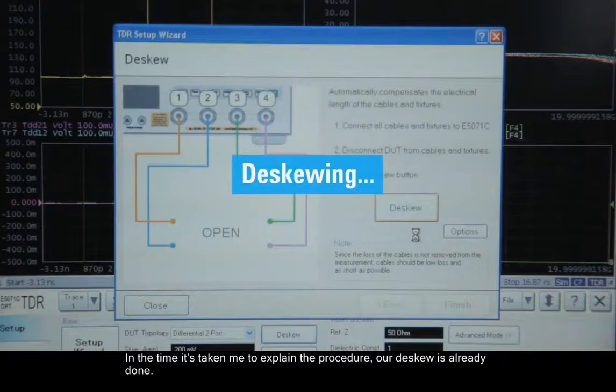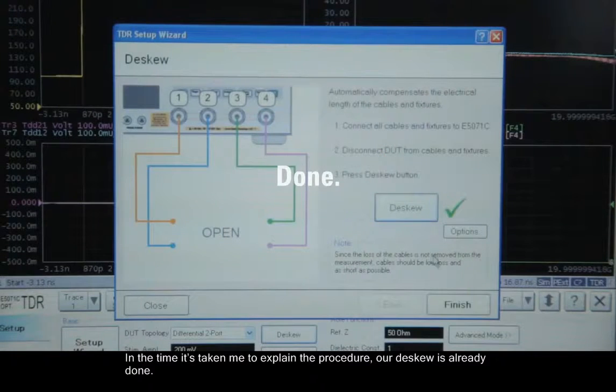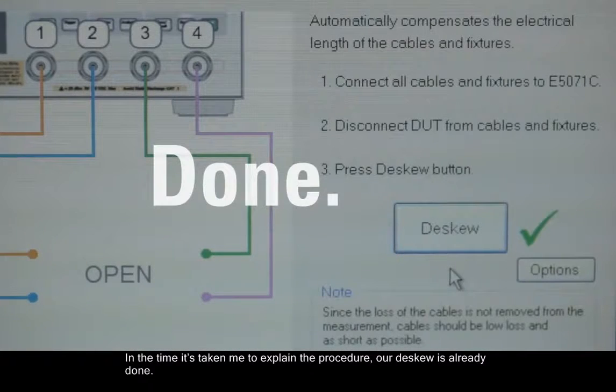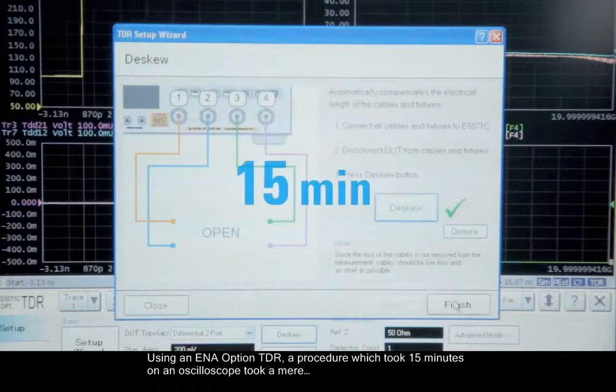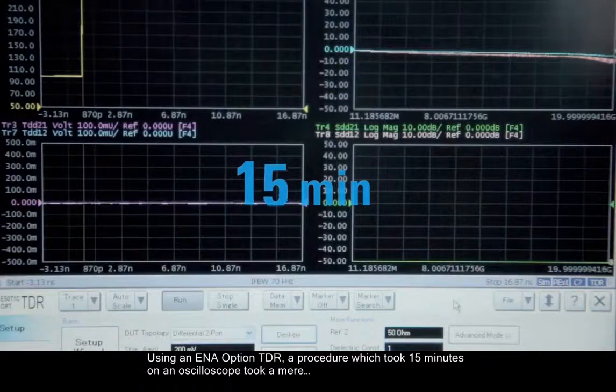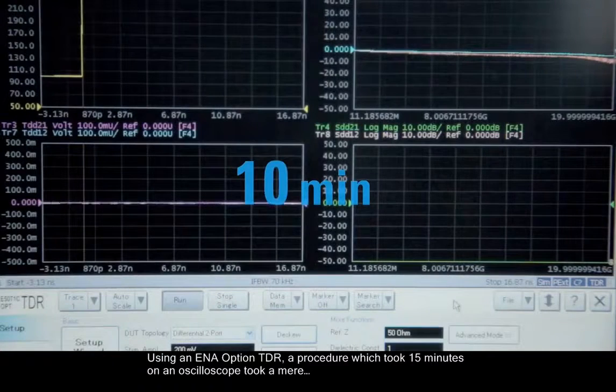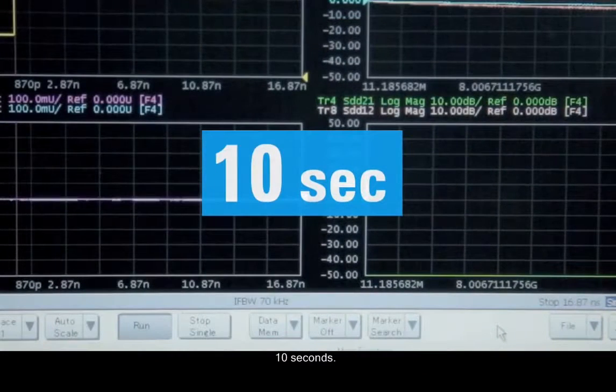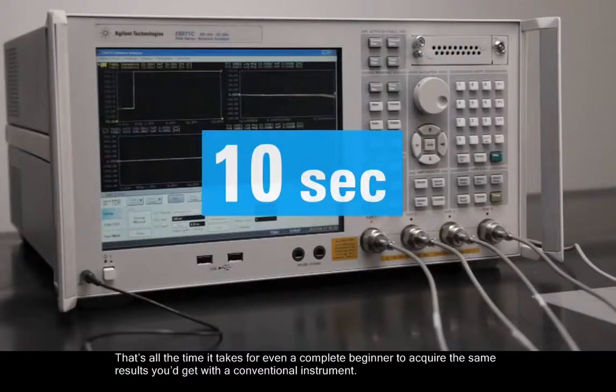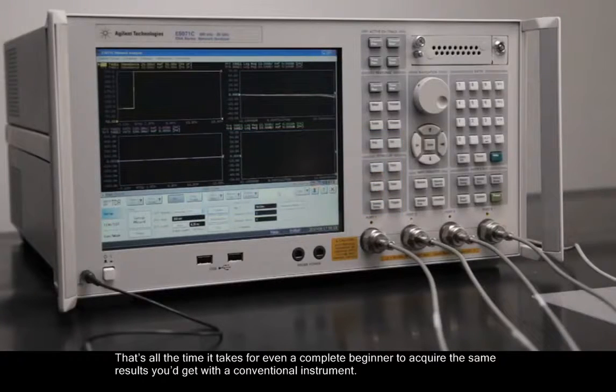In the time it's taken me to explain the procedure, our DSKU is already done. Using an ENA Option TDR, a procedure which took 15 minutes on an oscilloscope took a mere 10 seconds. That's all the time it takes for even a complete beginner to acquire the same results you'd get with a conventional instrument.